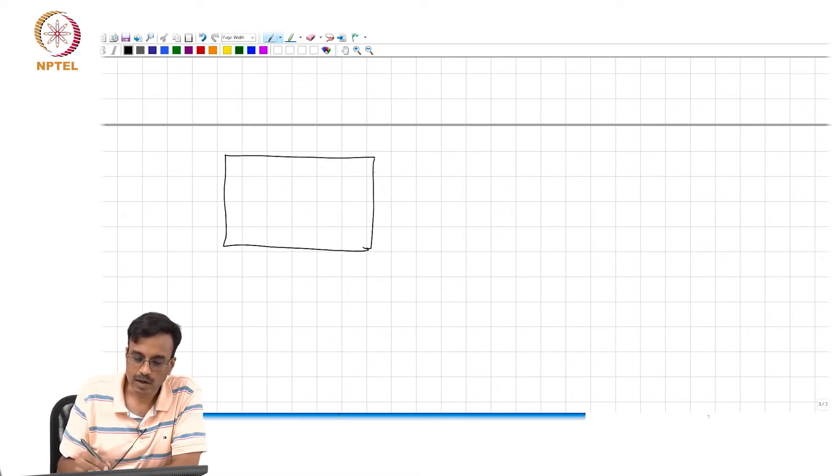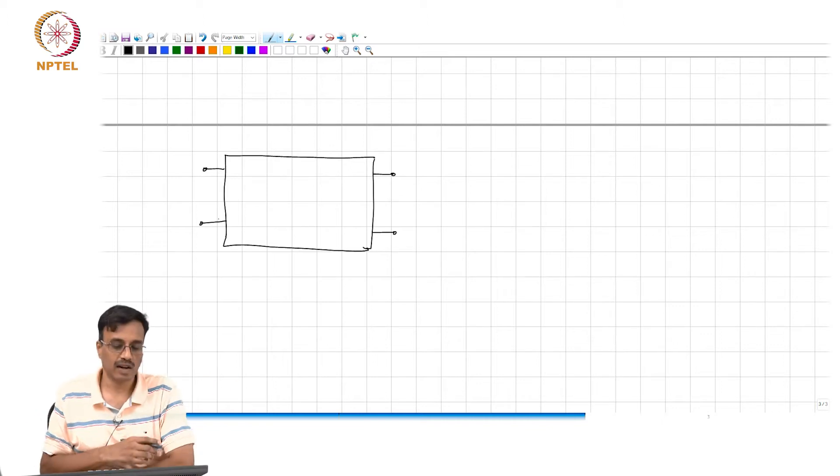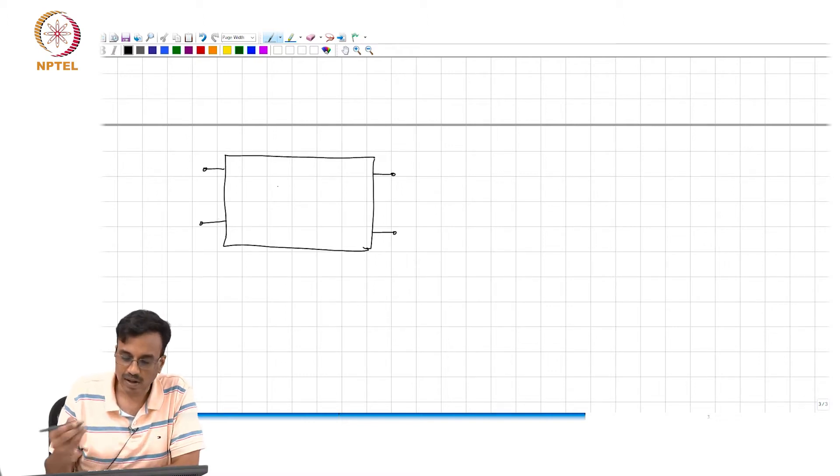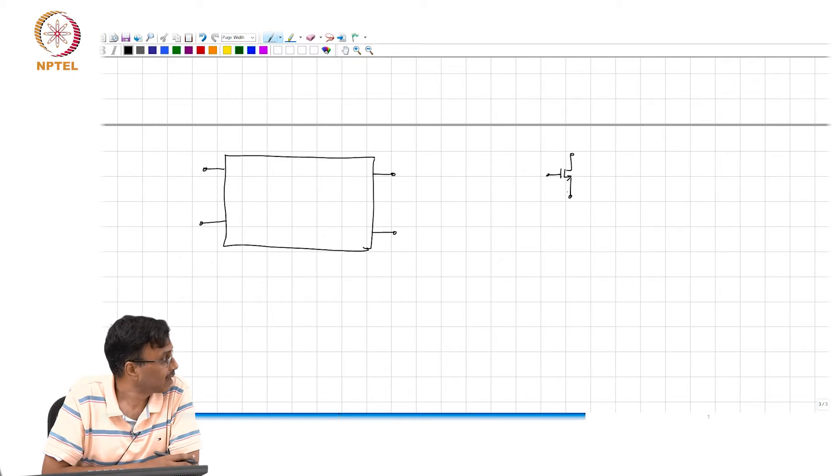For example, we have seen similar situations before. We have a big amplifier or a big network inside with multiple R's, L's and C's, and transistors.